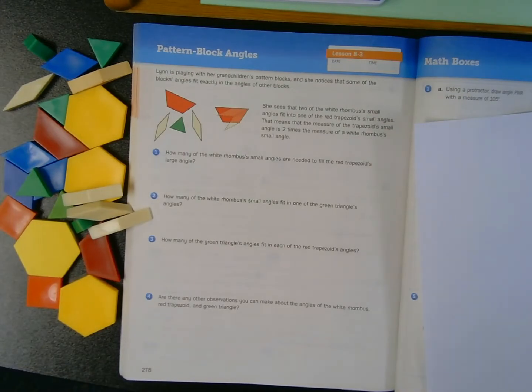Well hello everyone, it's Mr. Wassman, and today we're going to get to play with some pattern blocks. Well, not really play, so much as use them to determine some missing angle measurements. We are in our math journal, page 278, for Unit 8, Lesson 3.